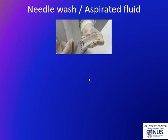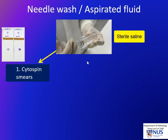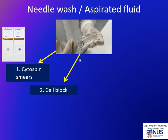So how do we do specimen triage? We can collect the needle material in several ways. If there is fluid aspirated, for example from a cystic lesion or purulent material from an infective lesion, we can collect the fluid directly. If it's a needle wash, we can wash in saline or various other solutions. The needle wash can be processed by centrifuging it and then making additional smears. We can also spin down the material, obtain a pellet, and make it into a cell block. A cell block is very useful because it allows ancillary tests like immunohistochemistry, molecular tests, sequencing, PCR-based tests, and FISH.